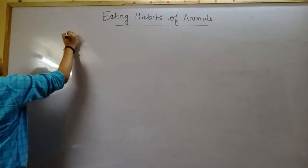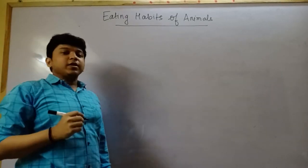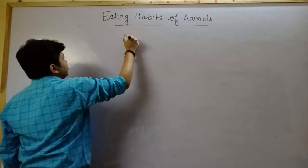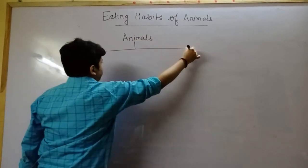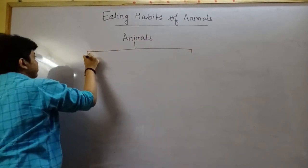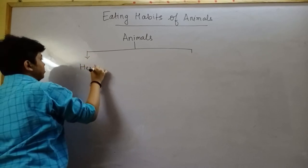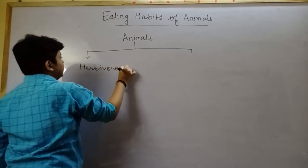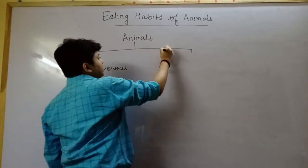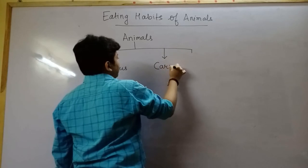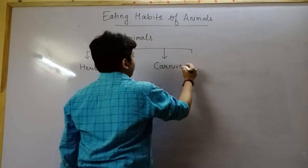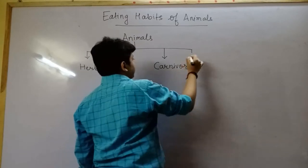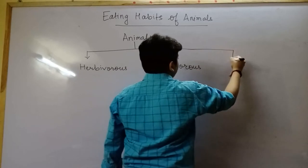What are herbivorous animals? Who are carnivorous animals? We can broadly divide the animal's eating habits into three types. The second one is carnivorous animals, and the third one is omnivorous animals.